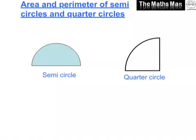Today I'm going to show you how to find the area and perimeter of semicircles and quarter circles. Here we have a semicircle and here we have a quarter of a circle. First of all I'm going to show you how to find the area of a semicircle.